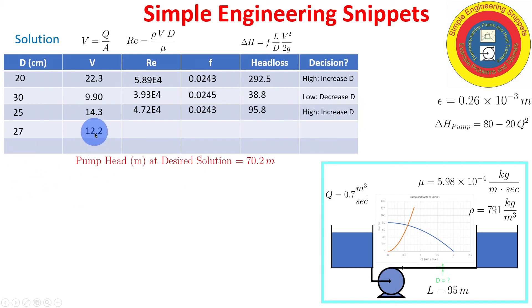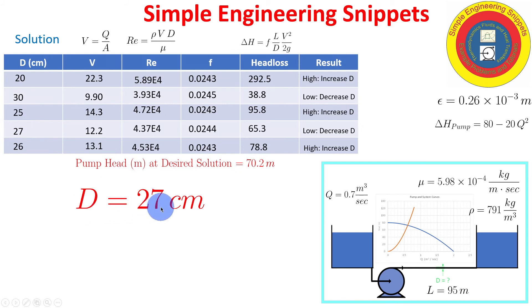Go to 27. And 65.3. So again it's lower than 70.2. So we're going to get more than our desired flow rate. And we got one more option that falls between 25 and 27 and that is 26. So let's go ahead and do 26. And our head loss is 78.8 which is larger than 70.2. So 26 doesn't work. 27 does. So we don't really need to do any more because we're limiting ourselves to the nearest centimeter. So 27 centimeters. That's our answer.